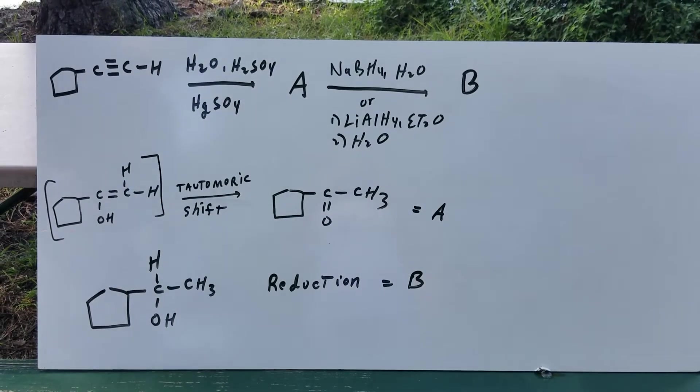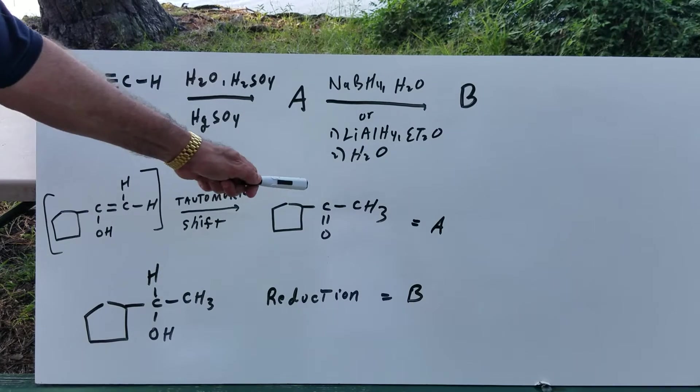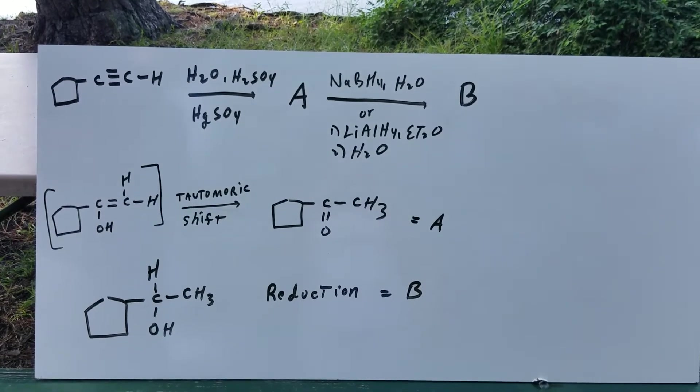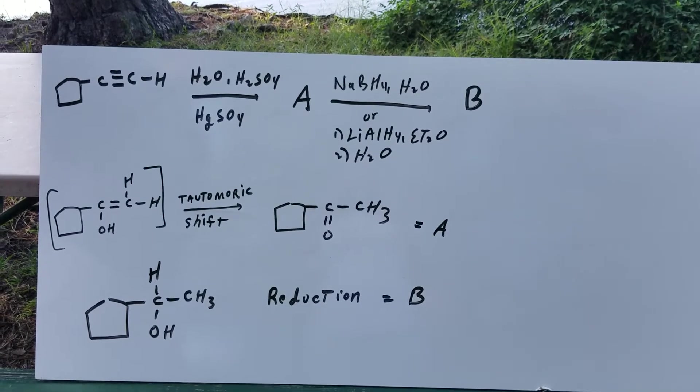What that's going to do is break the double bond O and add an H to the O and an H to the carbon, and give you an alcohol. That reaction when you added H's is called a reduction.